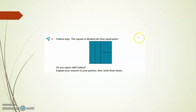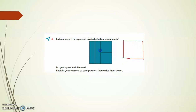Let us see if this is divided into four equal parts. A square is given. The square is halved, so it is divided into half. Each half is then divided again, so these four are equal parts.